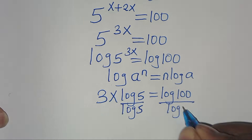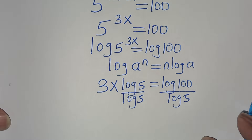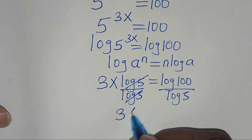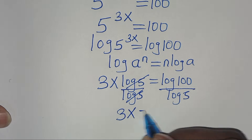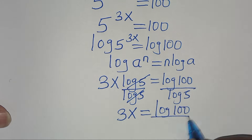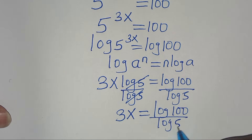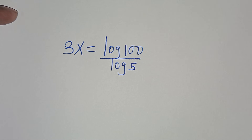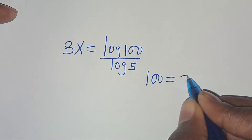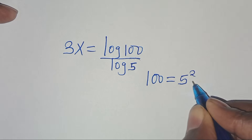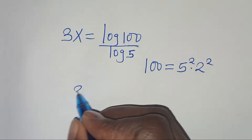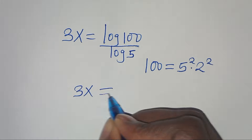Now let's divide both sides by log 5. Simplifying log 5 and log 5, we have 3x equals log 100 divided by log 5. Now log 100 is the same as log of 5 squared times 2 squared.